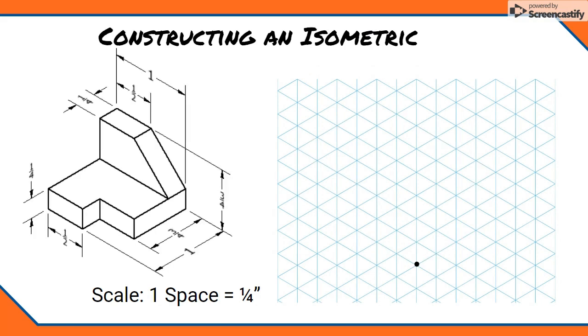This new example introduces two new challenges. Obviously the part has more details than the simple box we constructed last. But also, not all of the edges of this object are going to follow the isometric grid lines. Most of the edges of the part will either fall on a vertical or a 30 degree line, but the angled edges on the back won't. It's important to notice this at the start, so we can work on the other edges first and save those lines for last.